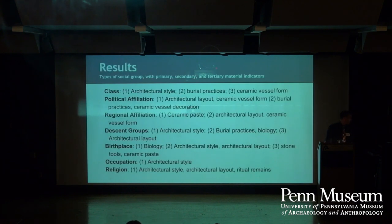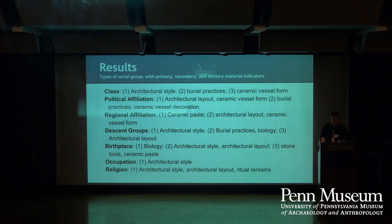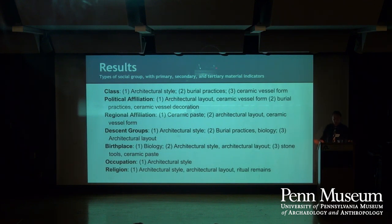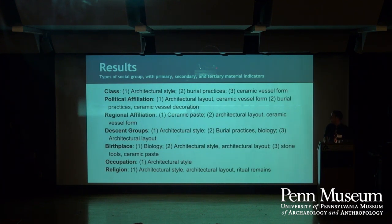The results of my literature review are summarized here. What you're looking at are the types of social groups that archaeologists have differentiated between in Mesoamerica and the types of material remains used to differentiate between those groups. Social class has been differentiated based on architectural style, burial practices, and ceramic vessel form, in that order of frequency — those are just the top three. For political affiliation, the top indicators are architectural layout, ceramic vessel form, burial practices, and ceramic vessel decoration. These material variables are ranked based on the frequency with which they've been used by archaeologists in the past. Going down the list, we have regional affiliation, descent groups, birthplace, occupation, and religion, each listed with the main indicators archaeologists have used to identify them.